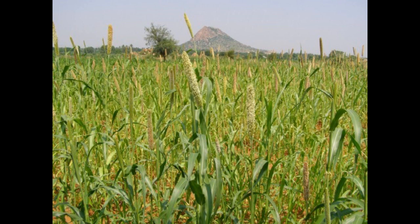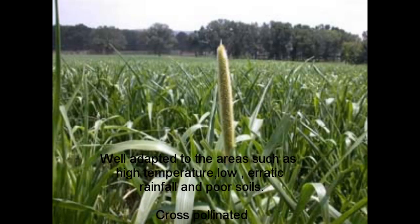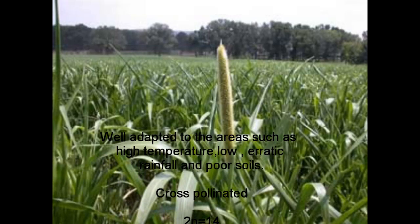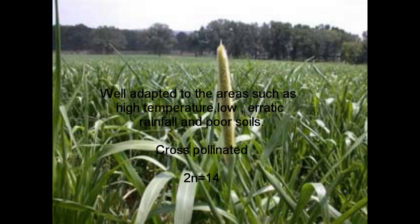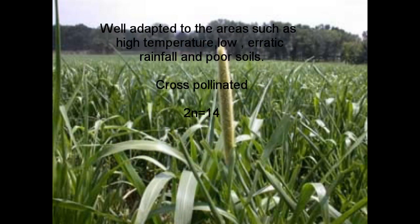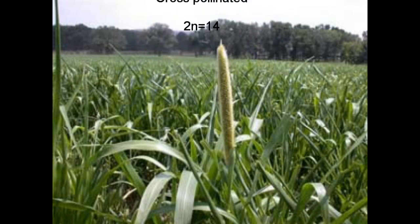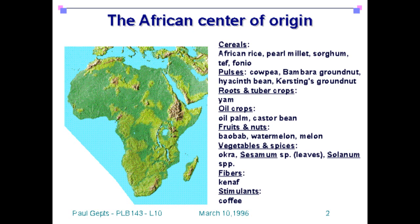It is the sixth most important cereal crop in the world. It is used as animal fodder, fuels, and building materials. It is well adapted to areas with high temperature, low and erratic rainfall, and poor soil. It is a cross-pollinated crop containing a diploid chromosome number of 14.